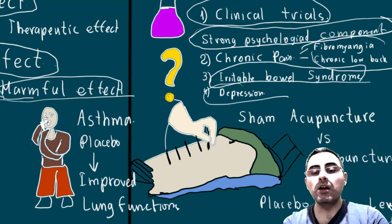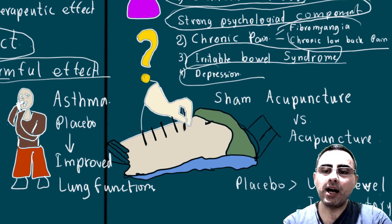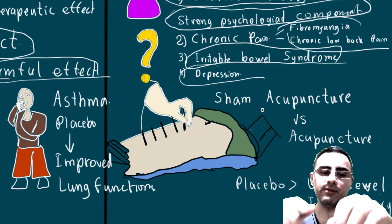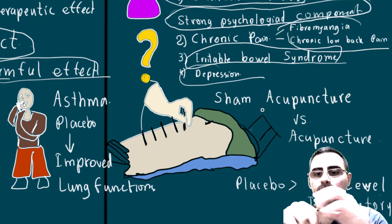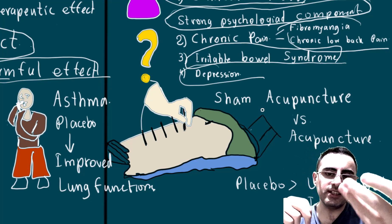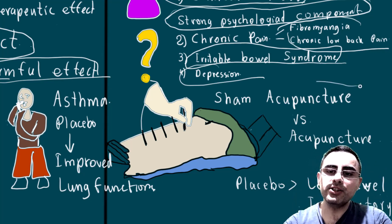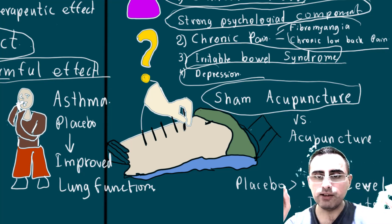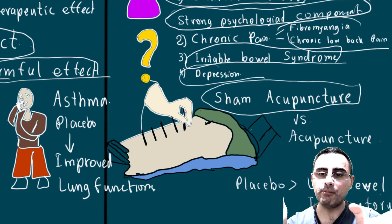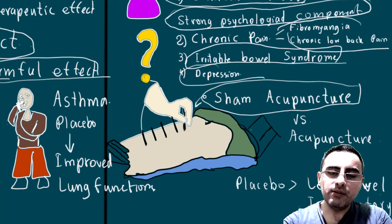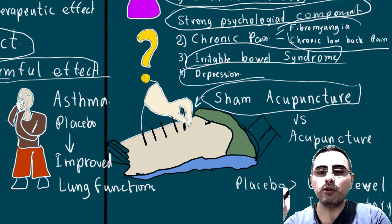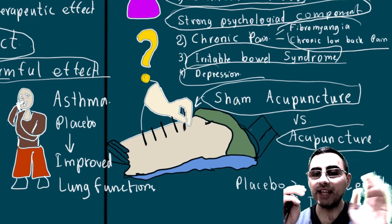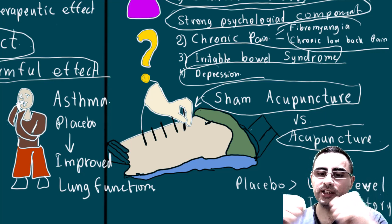Another well-known example is sham acupuncture in case of chronic low back pain. In acupuncture, specific acupoints are used with needles to reduce pain or stimulate the immune system. Sham acupuncture means using needles anywhere — not at the actual acupoints — and telling the person it will have an effect. This sham acupuncture, which is essentially a placebo, also improves chronic low back pain similarly to real acupuncture and conventional treatment.